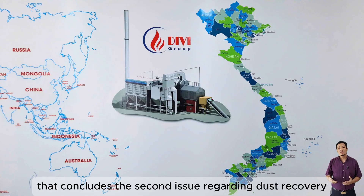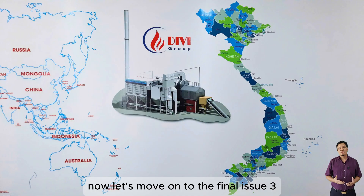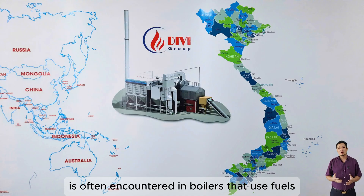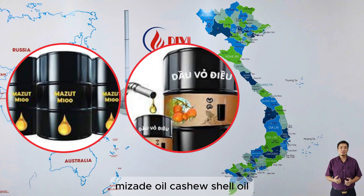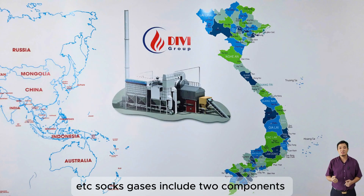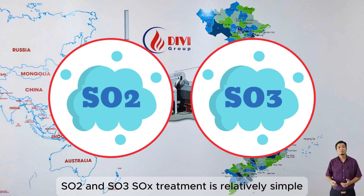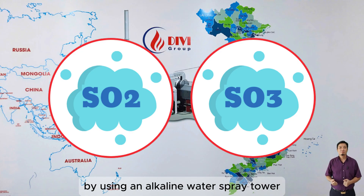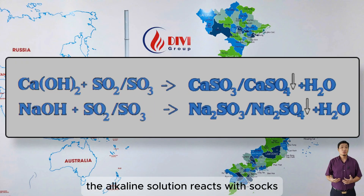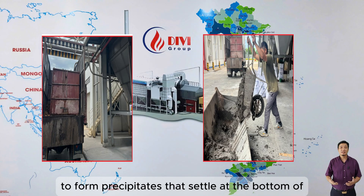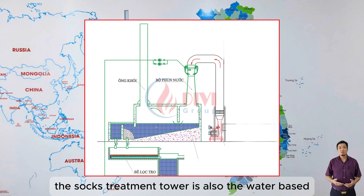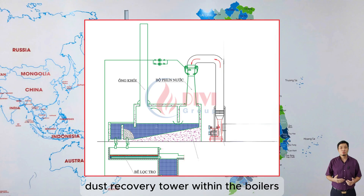That concludes the second issue regarding dust recovery. Now, let's move on to the final issue. Issue 3: SOx gas treatment. SOx gases are often encountered in boilers that use fuels high in sulfur, such as FO Mazzut oil, cashew shell oil, recycled rubber oil, coal, etc. SOx gases include two components: SO2 and SO3. SOx treatment is relatively simple by using an alkaline water spray tower, commonly lime water Ca(OH)2 or NaOH. The alkaline solution reacts with SOx to form precipitates that settle at the bottom of sedimentation tanks or spray towers for further collection and treatment. Typically, the SOx treatment tower is also the water-based dust recovery tower within the boiler's dust recovery system.